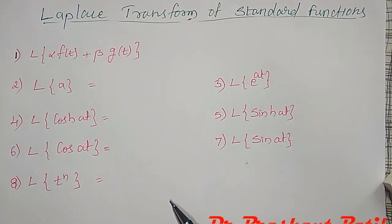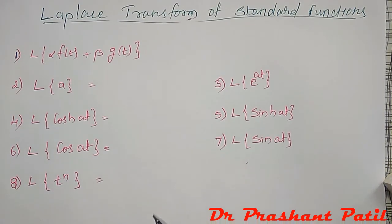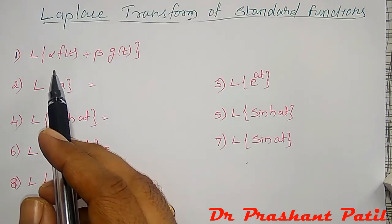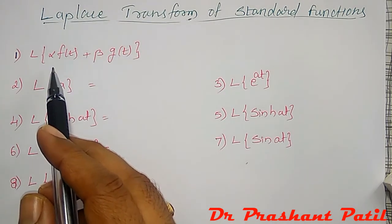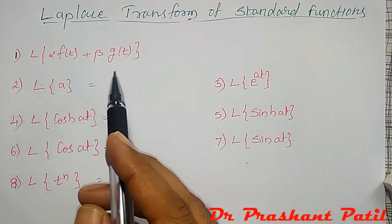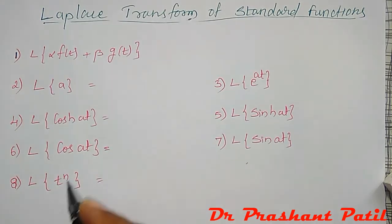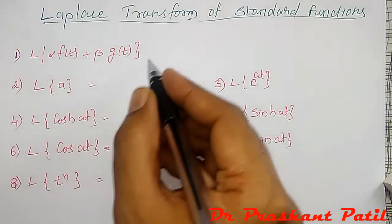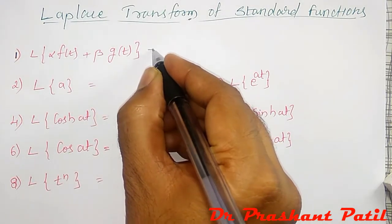In the last video I derived the Laplace transform of standard functions. The Laplace transform of alpha times f(t) plus beta times g(t) is known as the linear property.